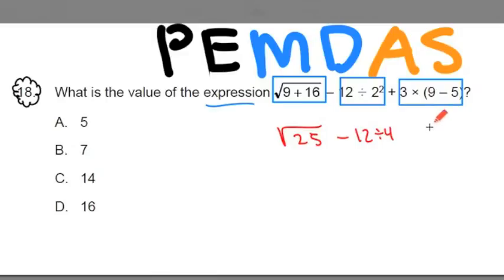And finally, our last problem is going to be, I do the stuff in the parenthesis, 9 minus 5 is 4. So we have plus 3 times 4.